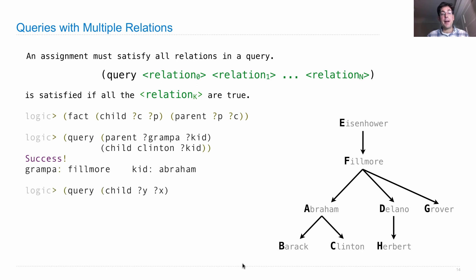If I wanted to ask, what are all of the child YX and child X Eisenhower at the same time? Assignments to the variables X and Y. What I'm saying is, there must be some Y and some X, such that Y is a child of X and X is a child of Eisenhower. That will be true as well. Here's one instance. Y is Abraham, X is Fillmore, and Eisenhower is at the top. Or we could have Delano, Fillmore, or we could have Grover, Fillmore.